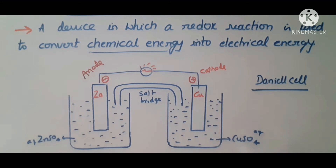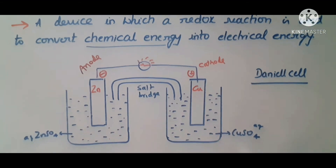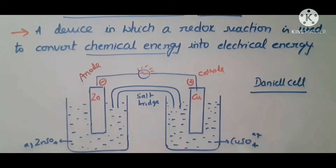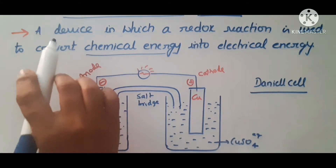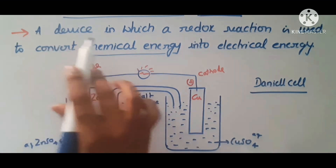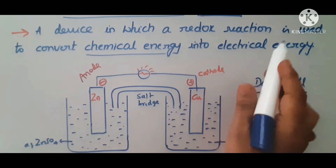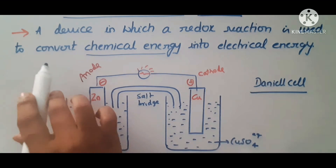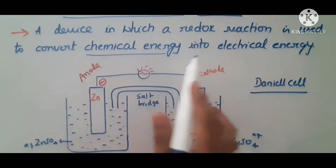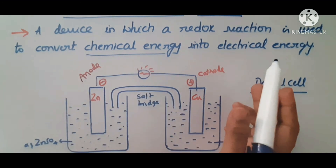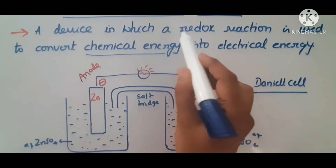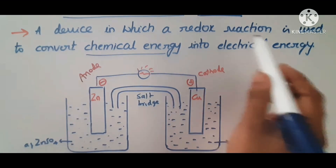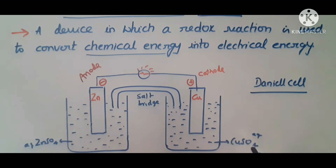The Daniel cell is the best example of a galvanic cell. The definition of a galvanic cell is: it is an arrangement or a device in which a redox reaction is used to convert chemical energy into electrical energy. Chemical energy is converted by means of a redox reaction.